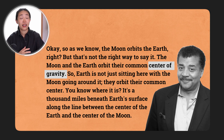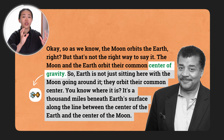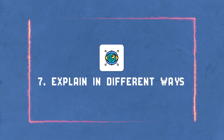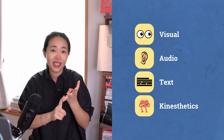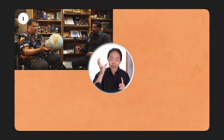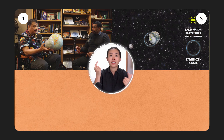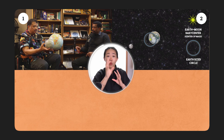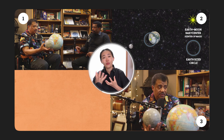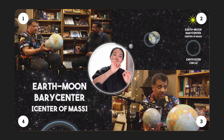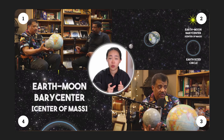Framework seven is explaining the same concept in four different ways — using visuals, audio, text, and kinesthetics. Neil first talks audibly about the center of mass being 1,000 miles beneath the earth's surface. Then he has moving graphics representing how the moon and earth orbit around the center of mass. Then with his hands he physically moves a globe and the moon. Plus he has text on his graphics showing the actual words being used. When you introduce a new concept, you have to put the spotlight on it and explain it in a few different ways so more people have a better chance of understanding.